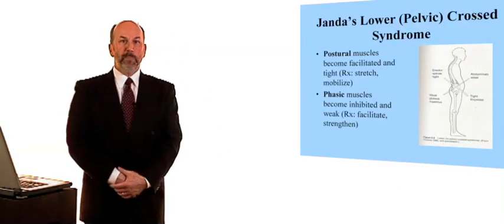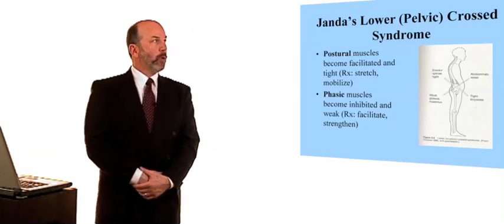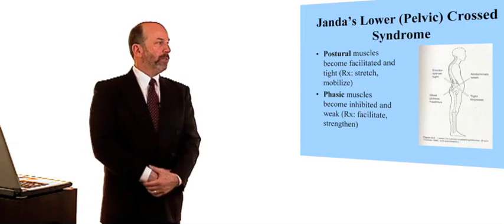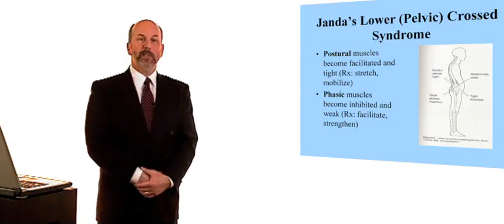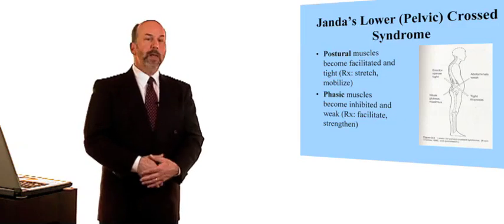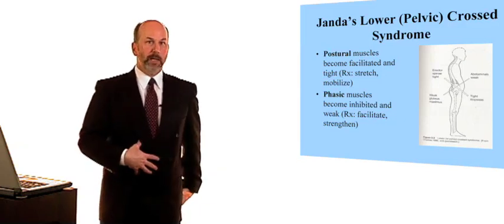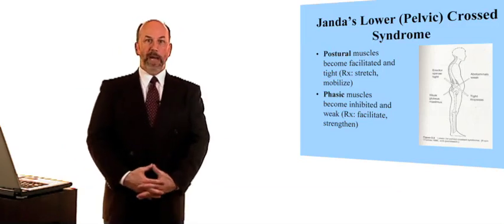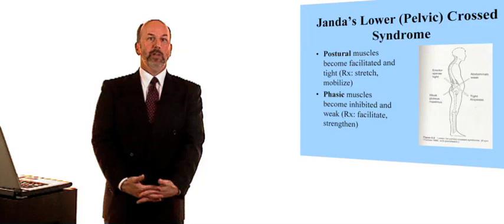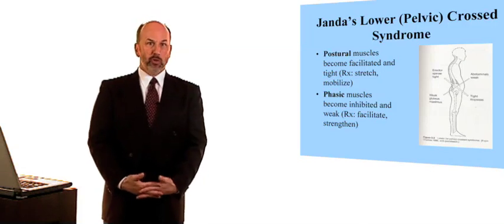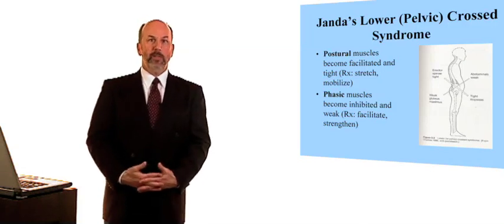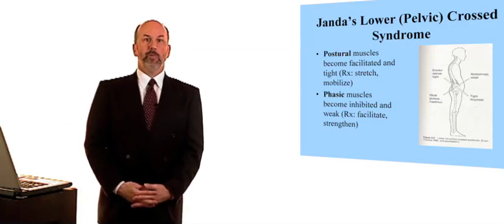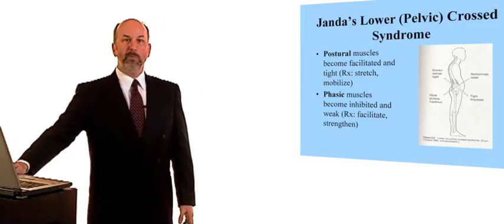Dr. Janda also talked about the pelvic or lower cross syndrome, where the hip muscles, the iliopsoas muscle in particular, become short, the paraspinals in the lumbar spine become short, and the lower abdominals and the gluteal muscles become weak. And again, the ideal intervention to address this imbalance is to stretch what's tight and to strengthen and to train what's weak. And we'll see how this device known as the posture jack helps very much to address these two imbalances that are present in the human body.